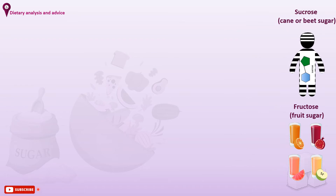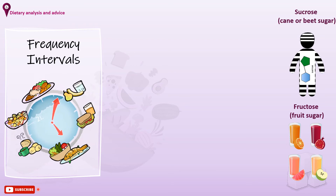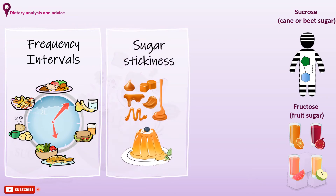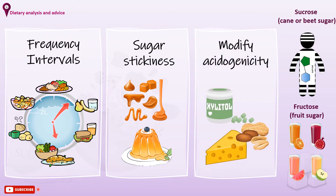Whatever sugar you incorporate in your diet, some other factors will affect caries density, like the frequency of sugar intake throughout the day and the interval between intakes, the total amount of sugar eaten, and the concentration and stickiness of food. The acidogenicity of a sugar-containing food can be modified by other items in the meal. For instance, foods that stimulate salivary flow can speed the return of plaque pH to normal, which decreases cariogenicity — like cheese, sugar-free gums, and salted peanuts.